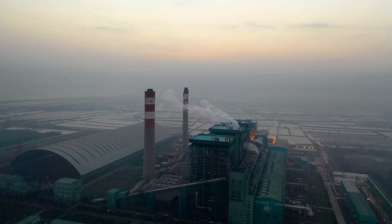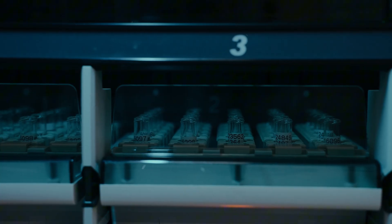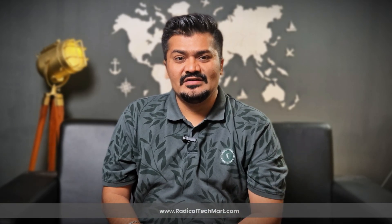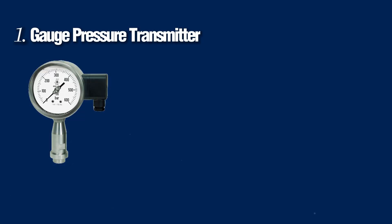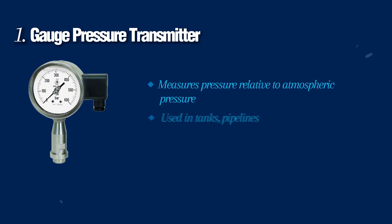Let's quickly look at the main types of pressure transmitters. First is the gauge pressure transmitter — it measures pressure relative to atmospheric pressure and is used in tanks and pipelines.